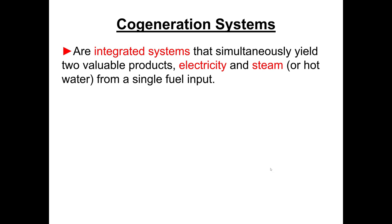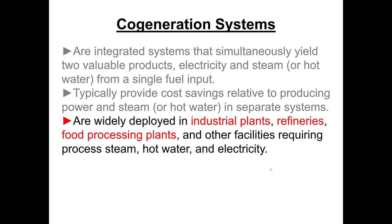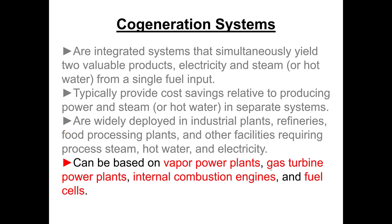Moving on to cogeneration systems: cogeneration is not a power cycle system in itself but rather a combination of a power plant with a community's need for hot water or steam, in order to provide cost savings in generating both commodities — power and heating steam. These processes are widely used in industrial plants, refineries, and food processing plants that require process steam as well as electricity. Cogeneration doesn't strictly require a Rankine cycle; it only requires any consistent, relatively high-temperature heat source.